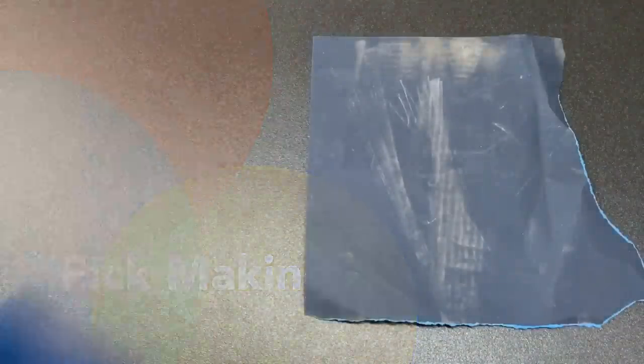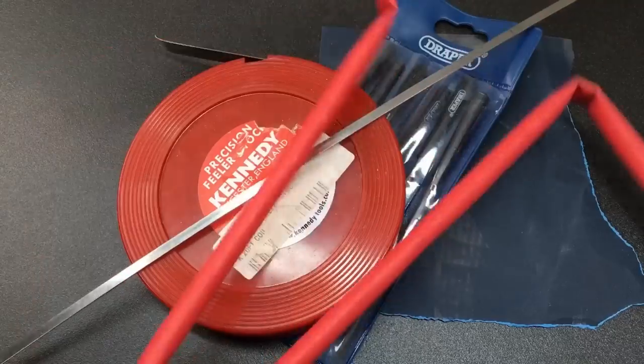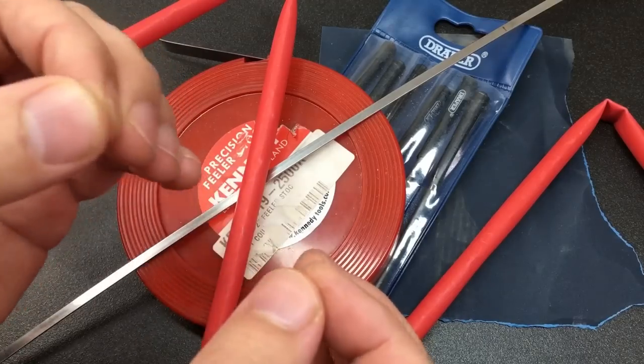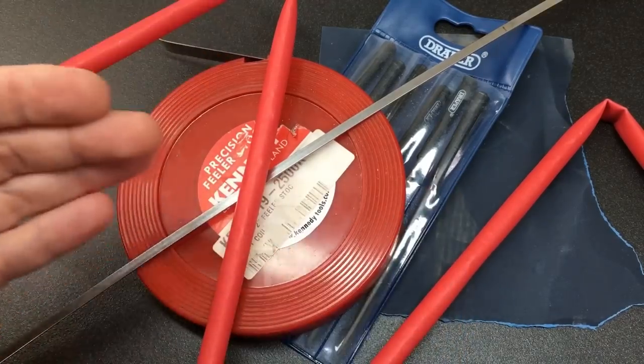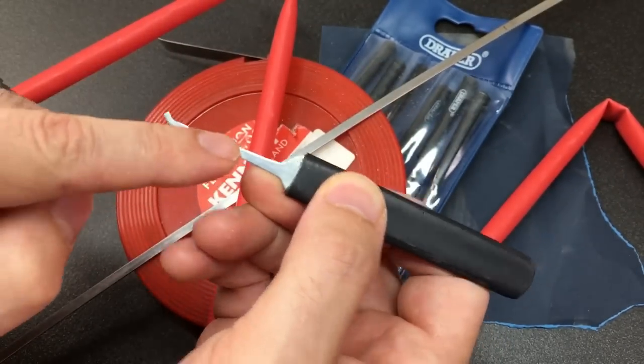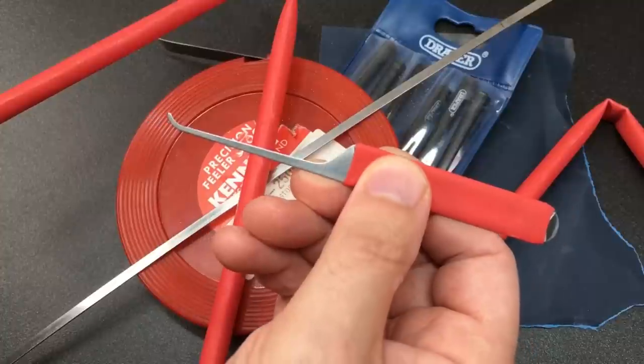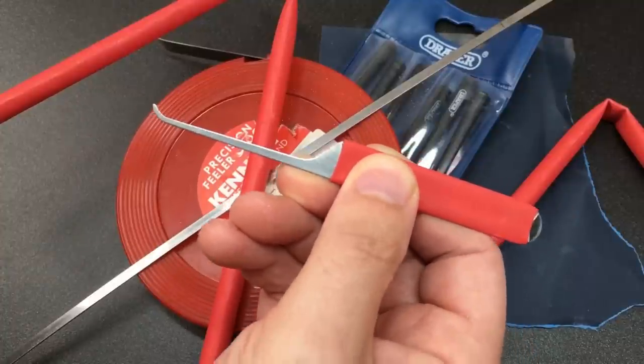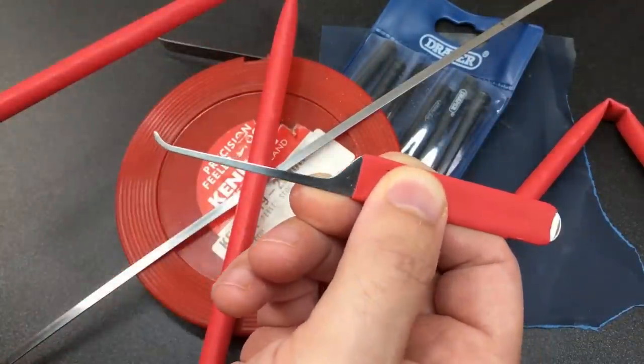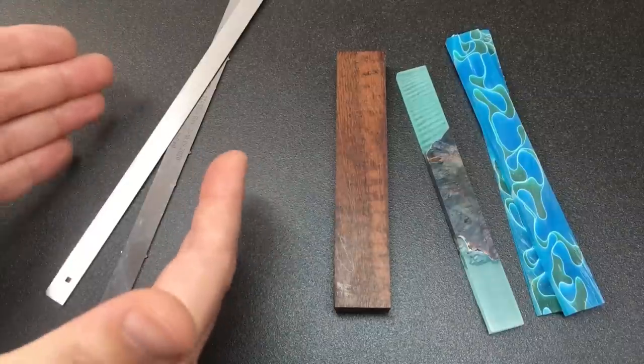If you have access to some sandpaper, some files, maybe some feeler gauge or wiper blade inserts, and optionally some shrink tubing, you can start to do one of the most enjoyable side hobbies in lock sport, and that is of course lock pick making. They don't have to be pretty. This was the first lock pick I ever made by myself, just using some feeler gauge, some shrink tubing, files and sandpaper. Not only is lock pick making incredibly satisfying, but you can start to make tools for very specific purposes, for example this super long nose pick for picking a super deep keyway.